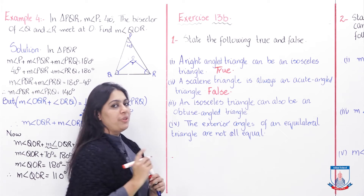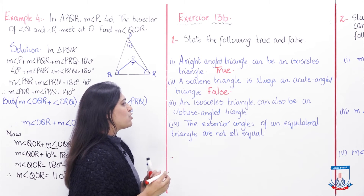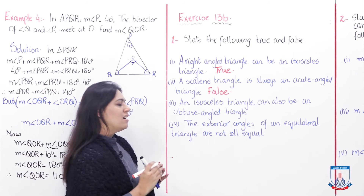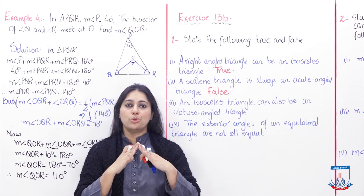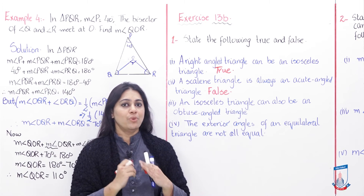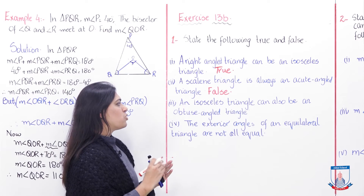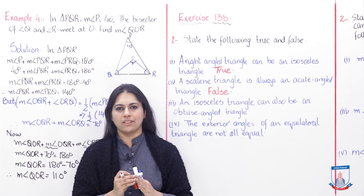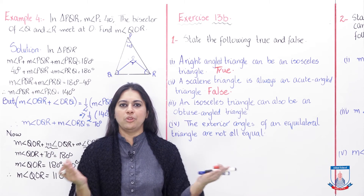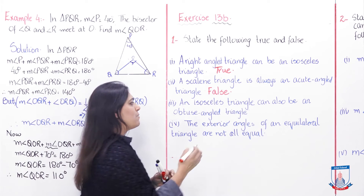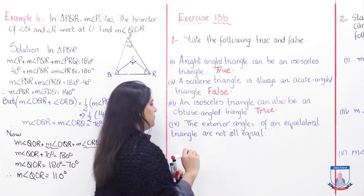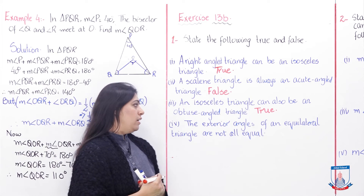The third part: an isosceles triangle can also be an obtuse-angled triangle. In an isosceles triangle, two sides and two angles are equal. Can it be obtuse? Yes, it can — one angle can be obtuse while the other two remain equal. So this statement is also TRUE, like the first one.